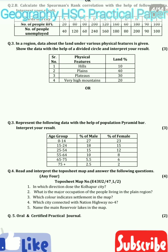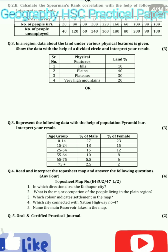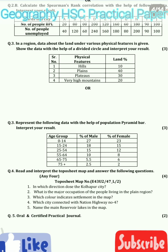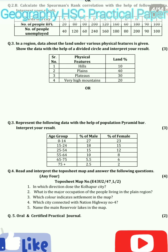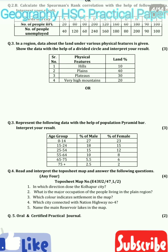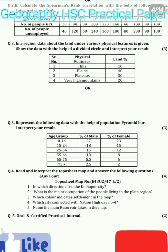After that you have question number 4. Yeh question topo sheet ke oopar hai. This is a compulsory question — iske alawa kuch bhi nahi hai. Textbook mein jo hume topo sheet di gayi thi, woh thi 63/12, jo Mirzapur town ke oopar thi. Exam ke time pe aapko randomly kisi bhi topo sheet ke baare mein puchha jayega ya phir aapko di jayegi.